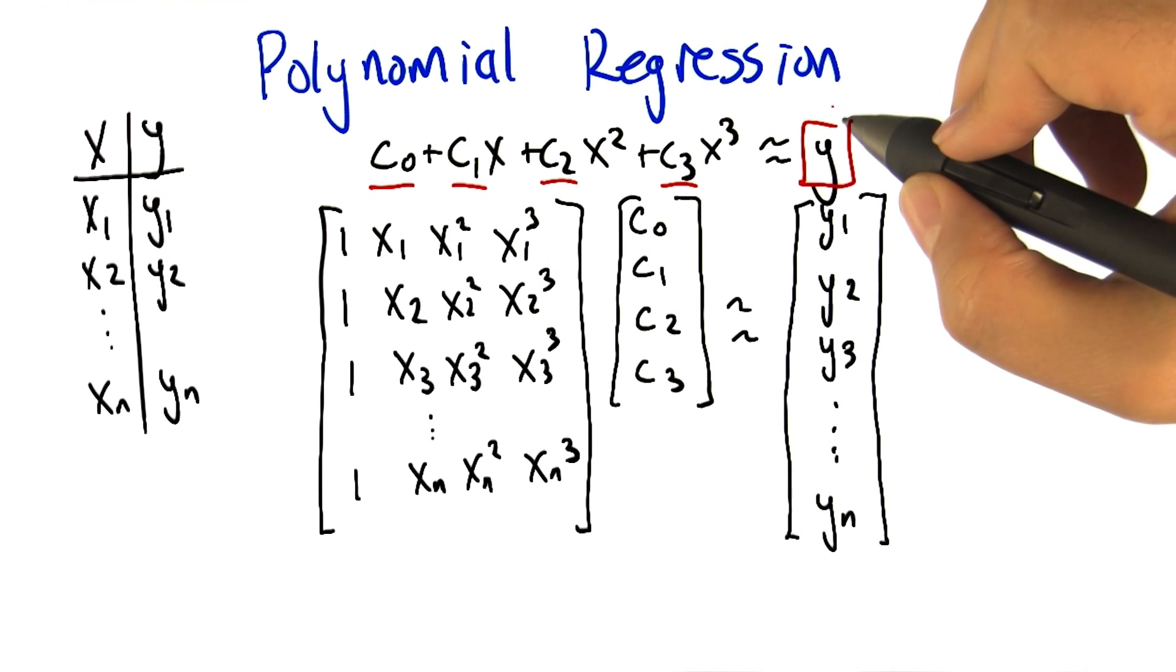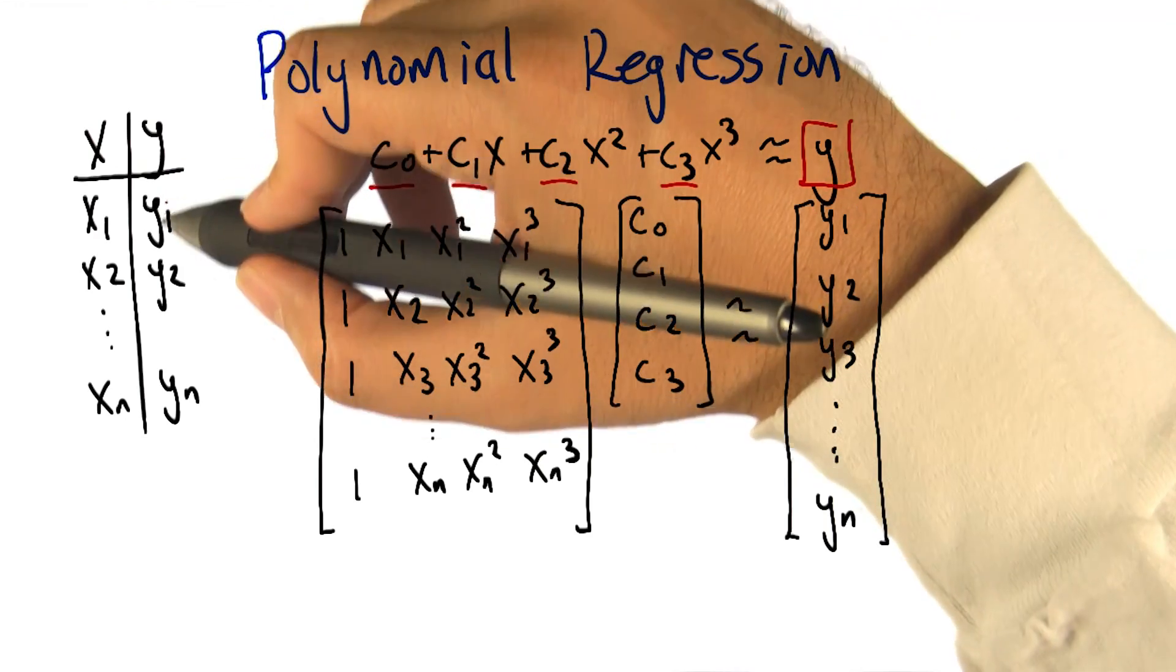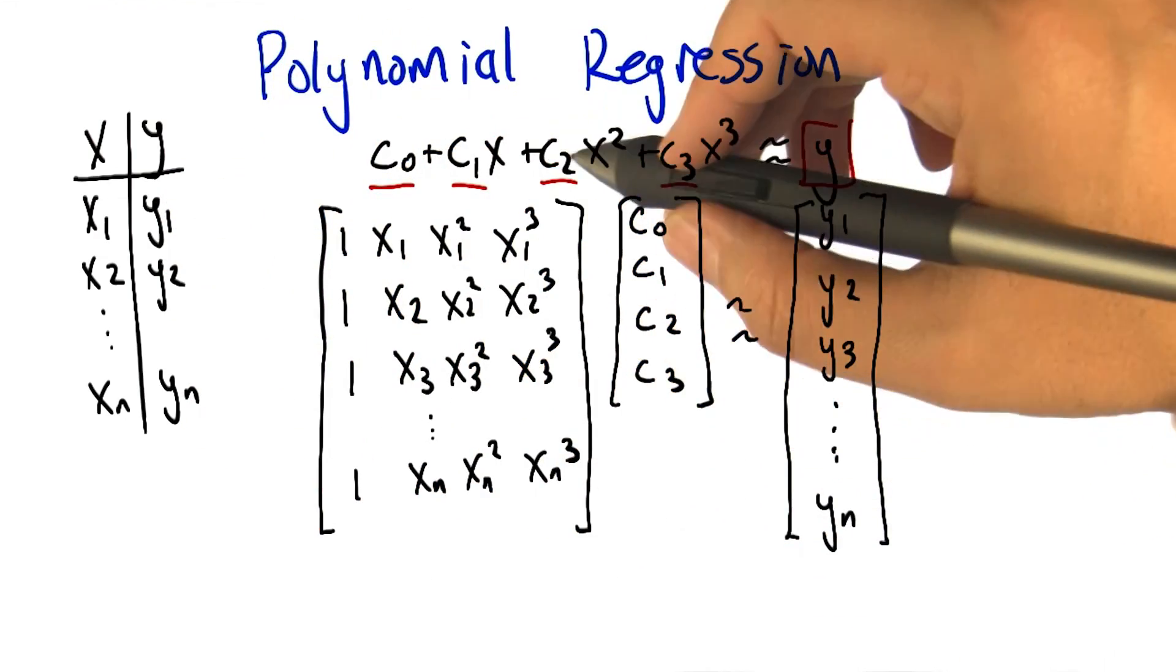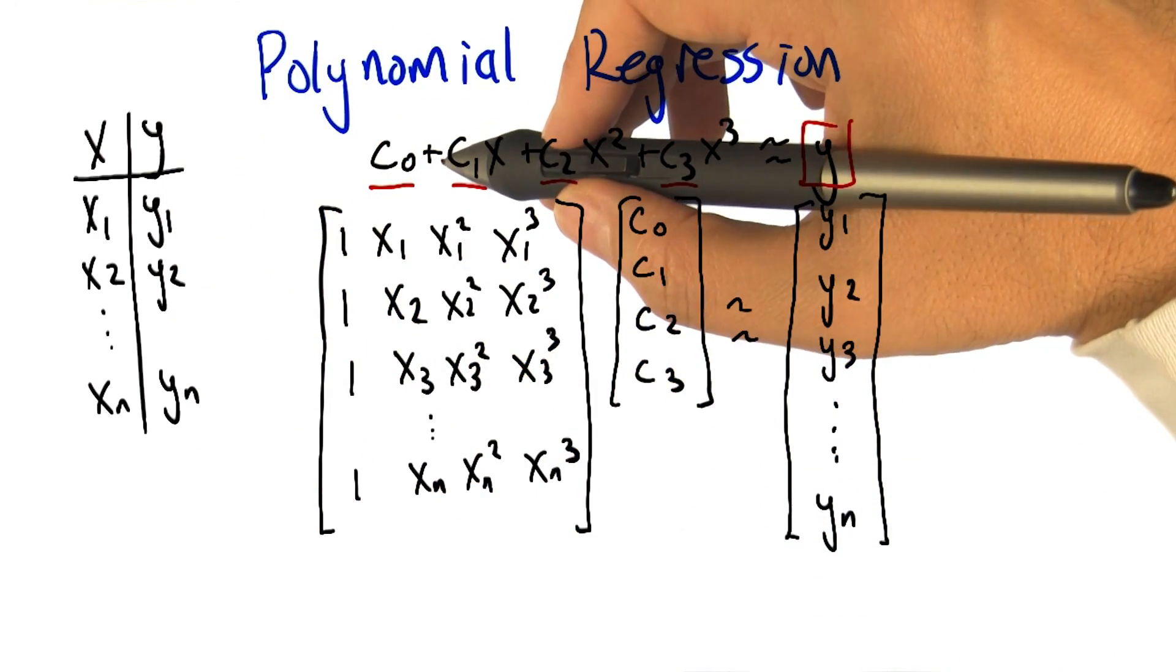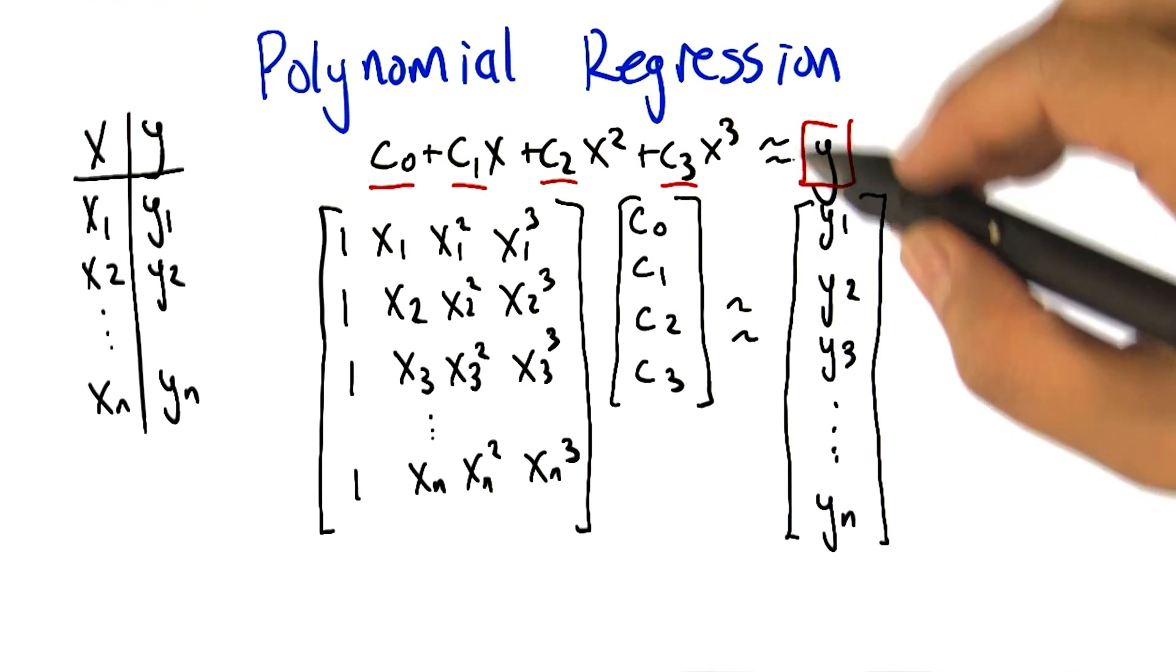Now we're not going to get it to exactly equal y, but let's pretend for a moment that we could. We have a bunch of these examples and we want it to work for all of them. So we can arrange all these constraints, all these equations into matrix form, if you're familiar with linear algebra.